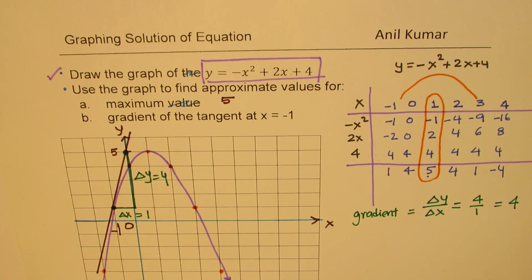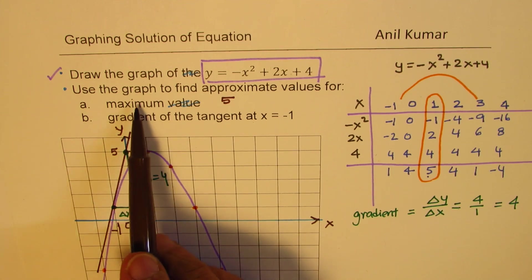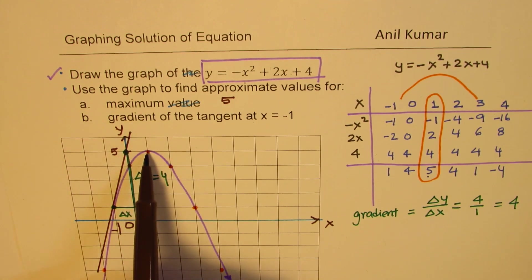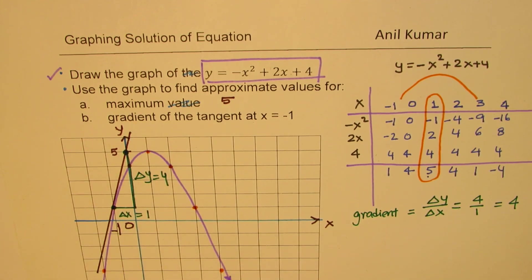The graph can help us to estimate the slope at any particular point. That gives you the slope of the tangent at any particular point. Remember that slope at the turning point will always be 0. The maximum is a turning point where the slope is going to be 0. I hope that helps you to understand how you can use the graph for different things.